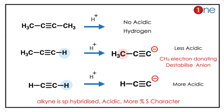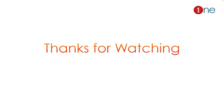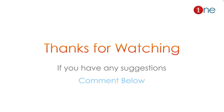So acetylene is more acidic than Q. The order of acidity is R > Q > P. The key concepts to remember: alkynes are acidic due to greater s-character, and electron-donating groups decrease acidity by destabilizing the resulting anion.